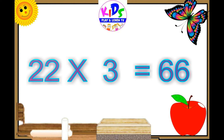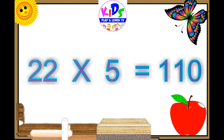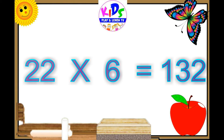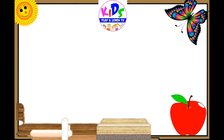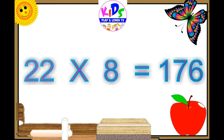22 threes are 66, 22 fours are 88, 22 fives are 110, 22 sixes are 132, 22 sevens are 154, 22 eights are 176.